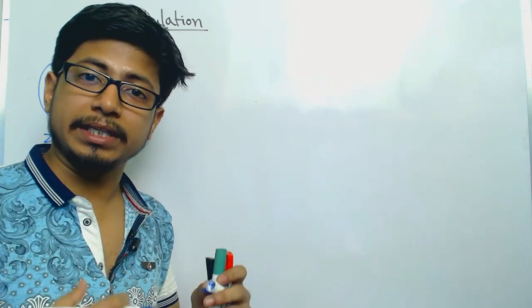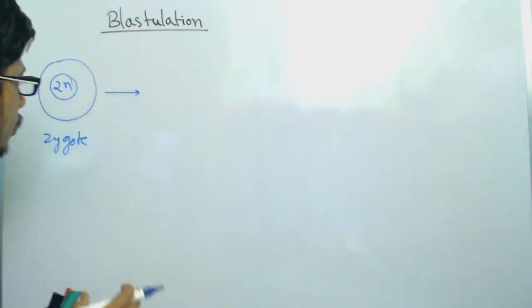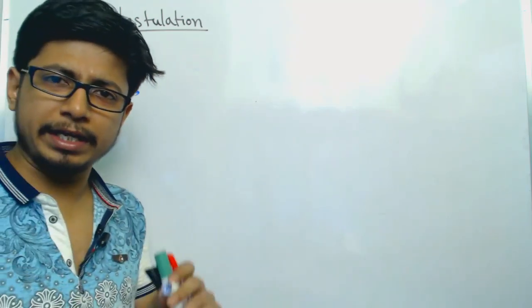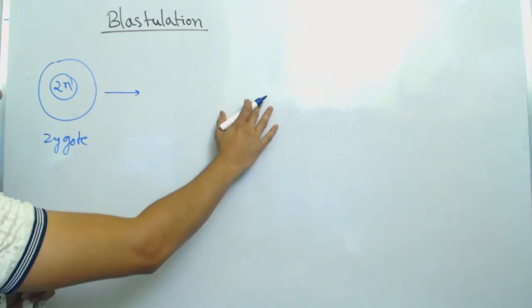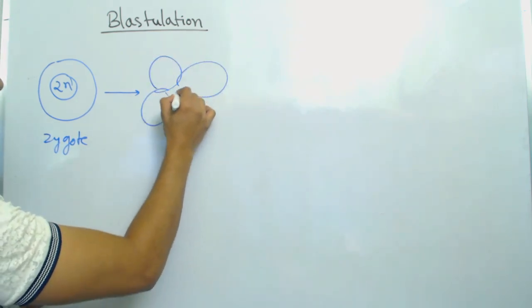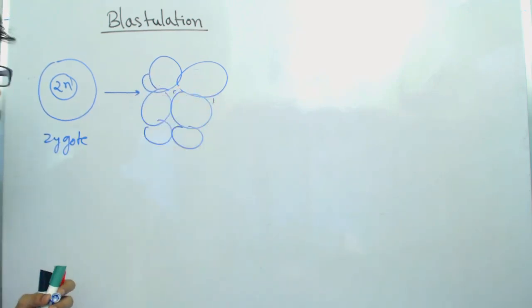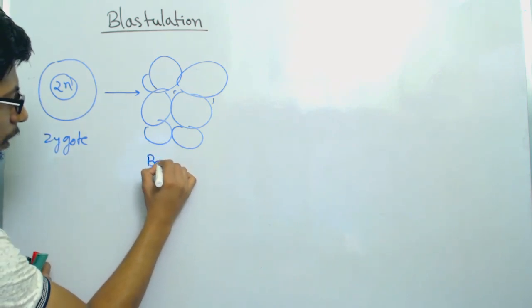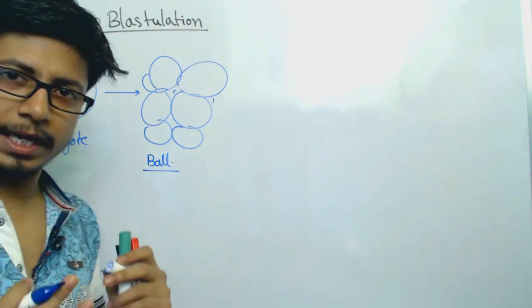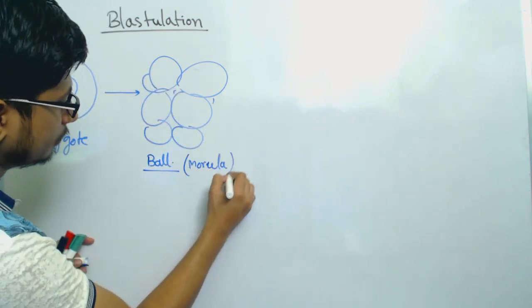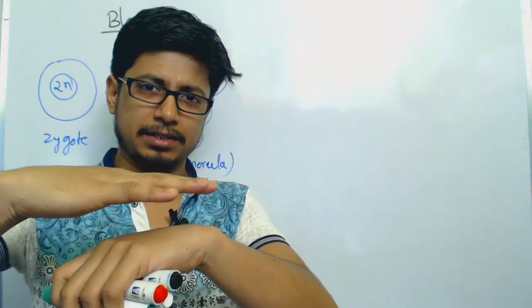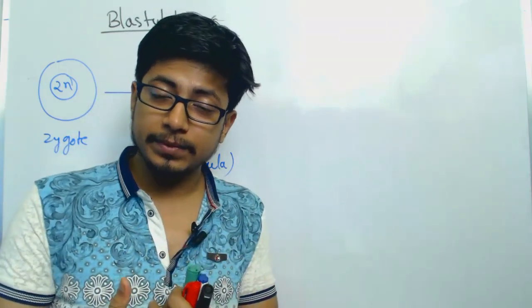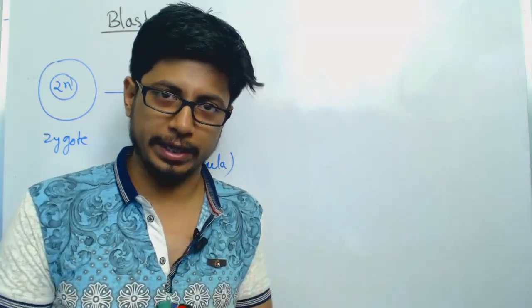Growth occurs in terms of both size and number of cells. That cell starts dividing very rapidly — the division at the very beginning takes much less time compared to a normal adult cell. Sooner it produces a mass of cells, like a rigid ball of cells known as a morula. This state is known as the morula state, where nothing is determined or differentiated — cells simply start dividing and arranging as stacked layers.